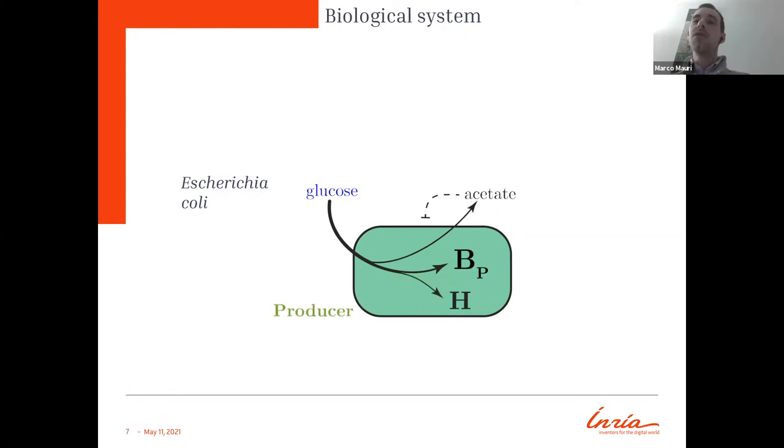We can also engineer easily Escherichia coli to produce some protein of interest. Here I call it H, heterologous protein, and we call this strain the producer.